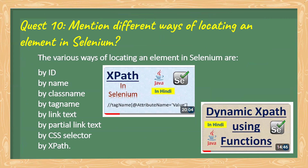The next question is: mention the different ways of locating an element in Selenium. There are various ways: By.id, By.name, By.className, By.tagName, By.linkText, By.partialLinkText, By.cssSelector, and By.xpath. Two of the most commonly used are CSS Selector and XPath.